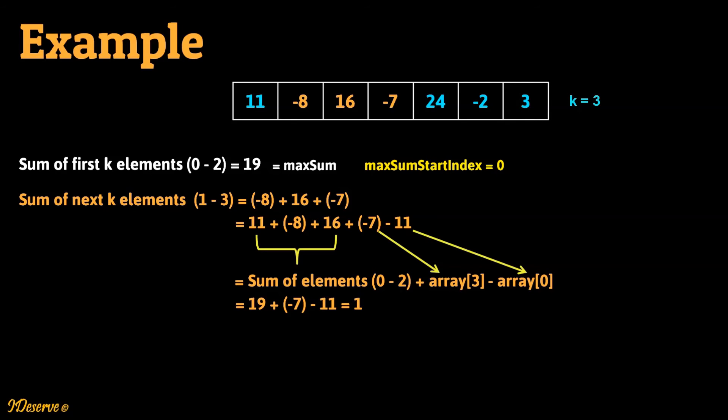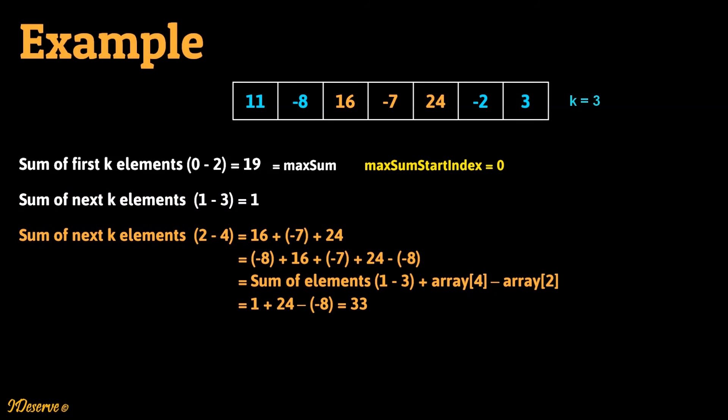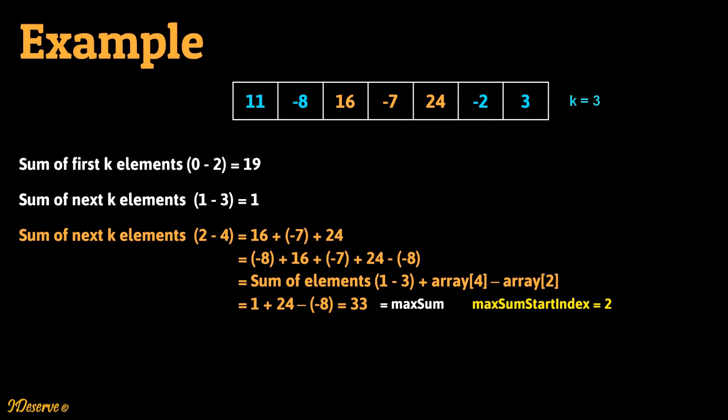So we can see that the sum of the next k elements can be calculated using the previously calculated sum of k elements. This can be seen as a window of size 3 sliding across the array. Here, the sum of k elements from index 1 to 3 is 1, which is less than the current max sum of 19, so we do not update max sum and max sum start index. Similarly, the sum of next k elements from index 2 to 4 is 33. We update max sum to 33 and max sum start index to 2.